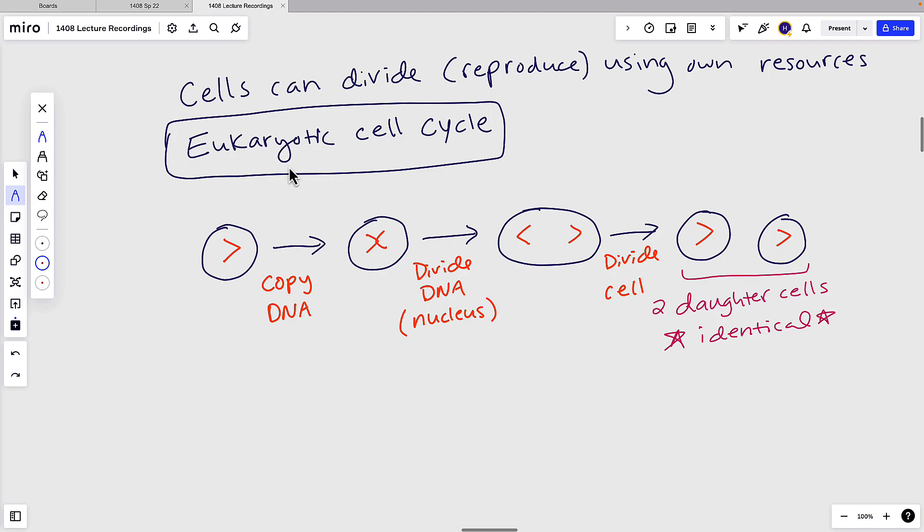Let's write some parts of the cell cycle. This copying DNA, we'll see in a moment, is called S phase. This division of the nucleus is mitosis, and this division of the cell is cytokinesis.